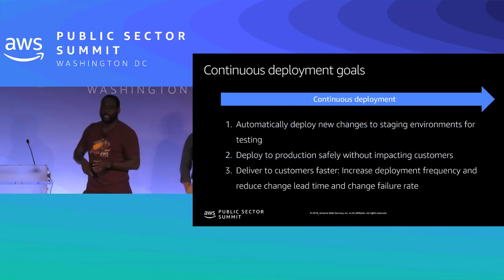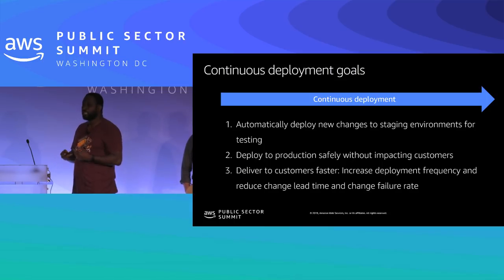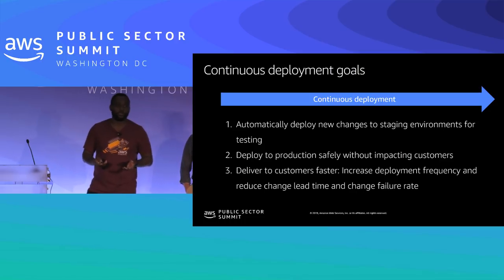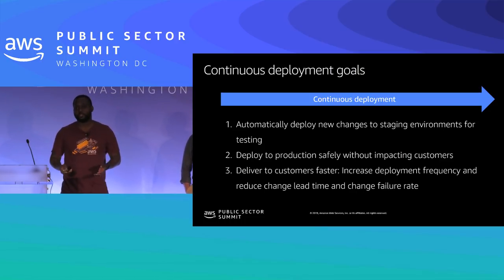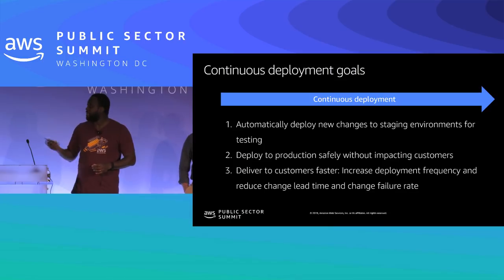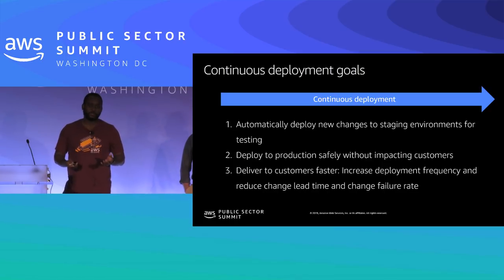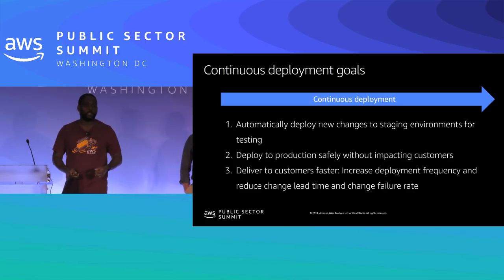Continuous deployment is about automatically deploying changes — deploying to production without impacting customers negatively, delivering to customers faster, and increasing deployment frequency while reducing change lead time and failure rate. Some people ask whether you have to deploy continuously to production — yes, that's the goal. Many start by deploying continuously to staging or testing environments, which is great, but eventually you want to reach production. You can have manual gates, but having this operationalized such that it could happen automatically will have a tremendous impact on productivity.